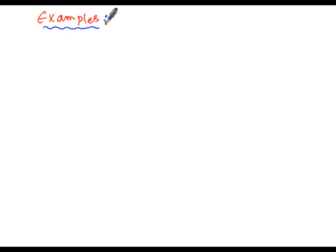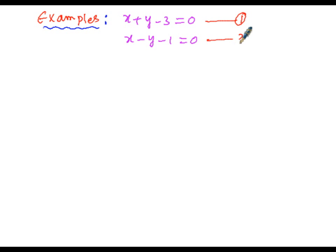Let us consider an example of two simultaneous equations. The first equation is x plus y minus 3 equals to 0, and the second equation is x minus y minus 1 equals to 0. Together these form a pair of simultaneous equations. We are going to solve these to find the solution — that is, an ordered pair consisting of the values of x and y.